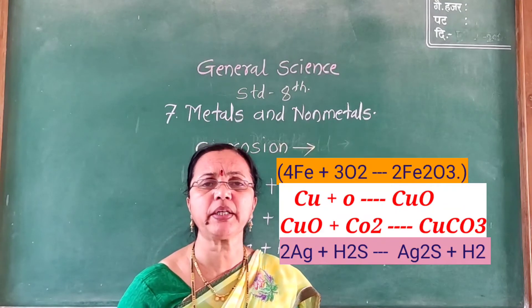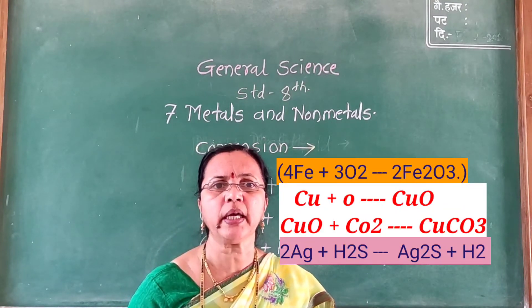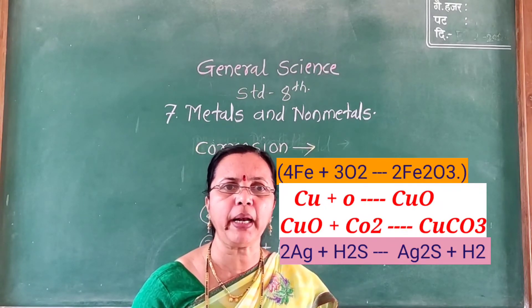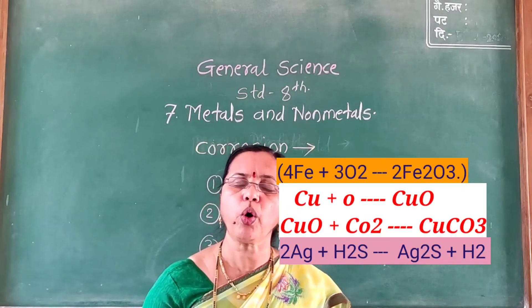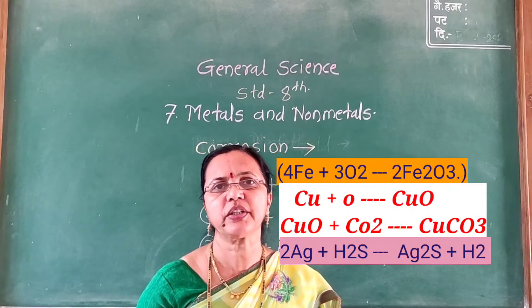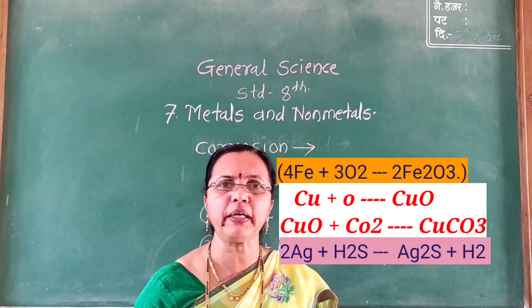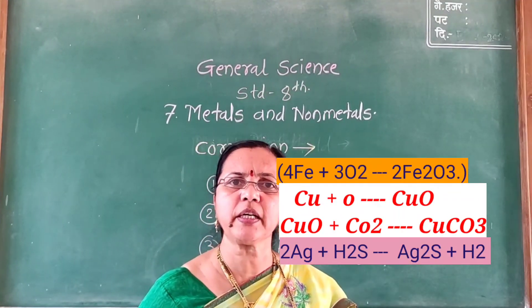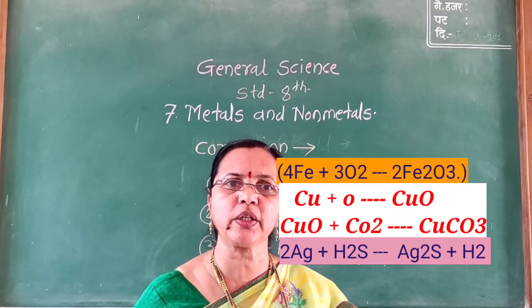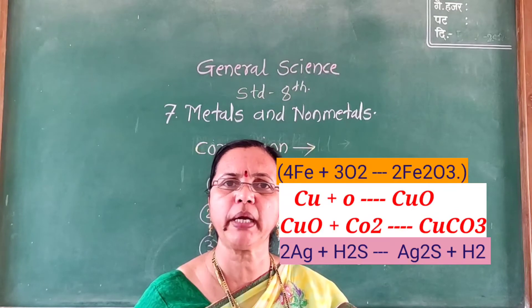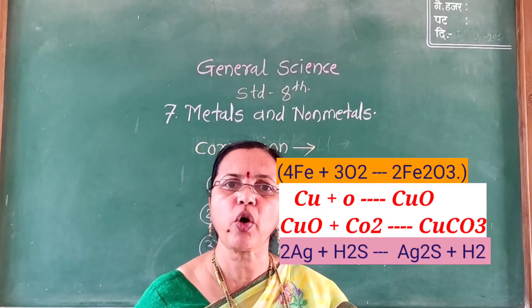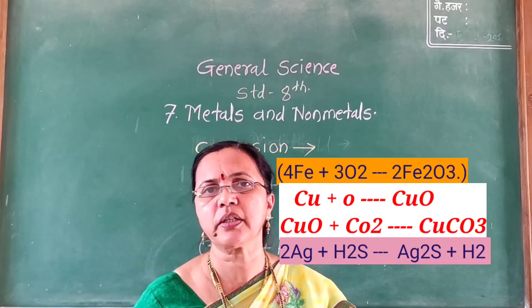To prevent corrosion in metals, a layer of oil, grease, varnish and paint are applied. Iron can also be protected by zinc plating so that chemical reactions cannot occur on the iron surface.